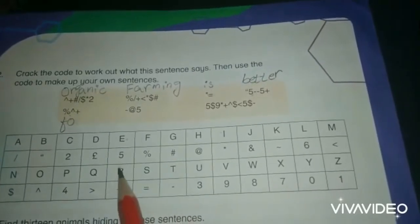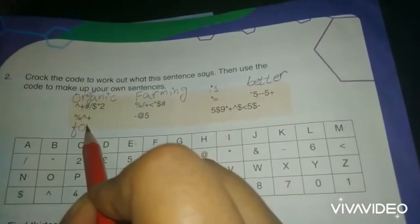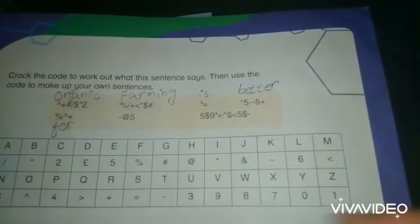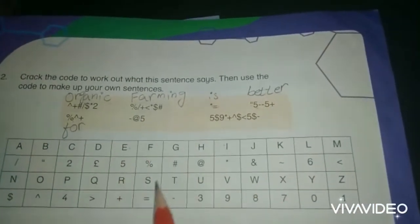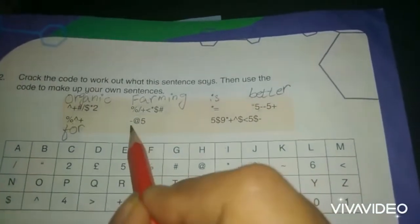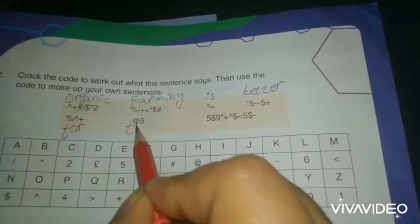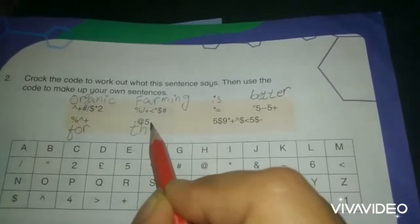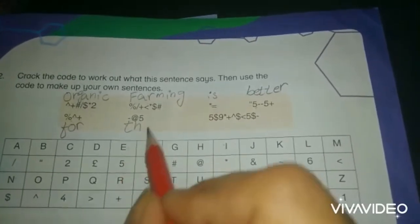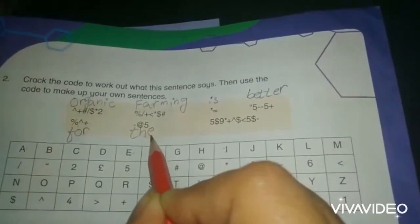And plus has R, alphabet for. The next sign has alphabet T, H, and 5 represents E alphabet. The.